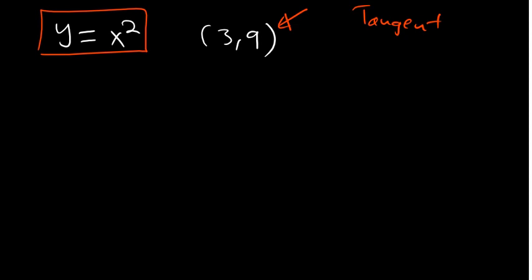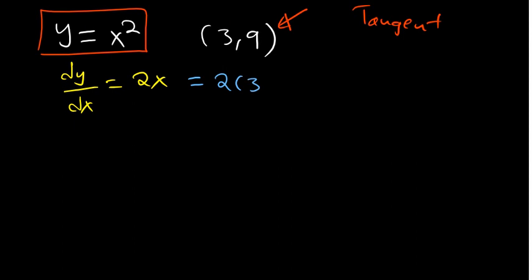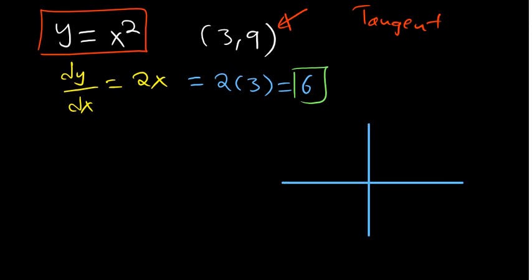The first thing we want to do is find dy/dx. The derivative is 2x — that is the gradient function. Now we can find the actual gradient at the given point. In this case our value of x is 3, so substituting 3 we get 6. This is our gradient of the curve at the given point. The function y equals x squared is a parabola that does not go to a negative part.